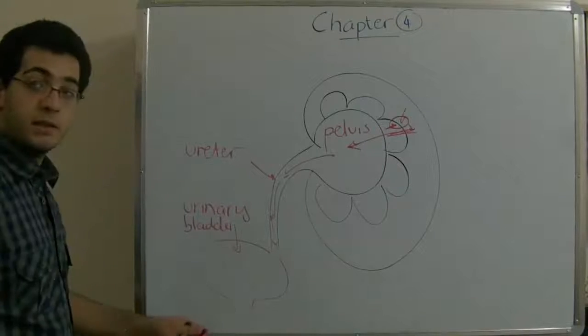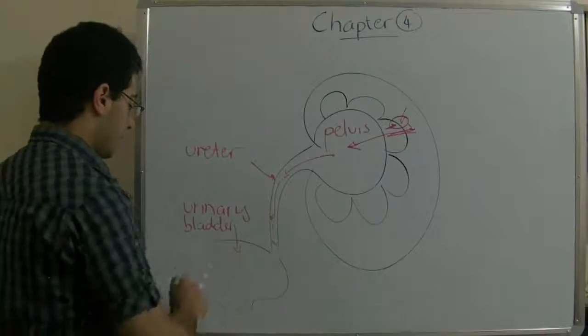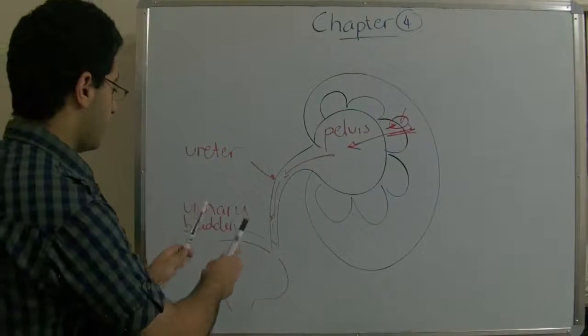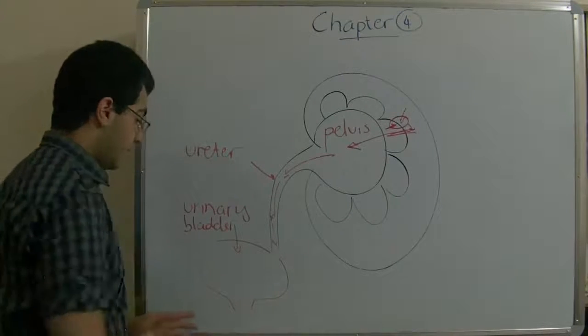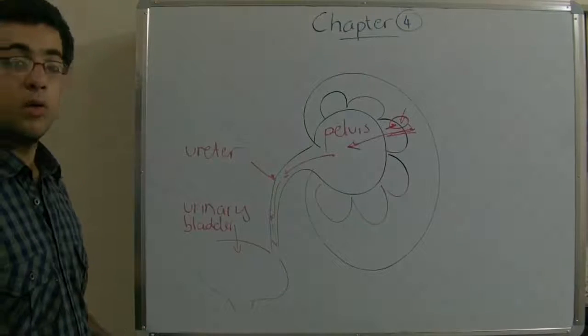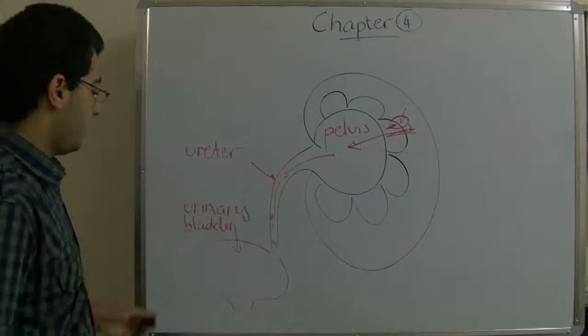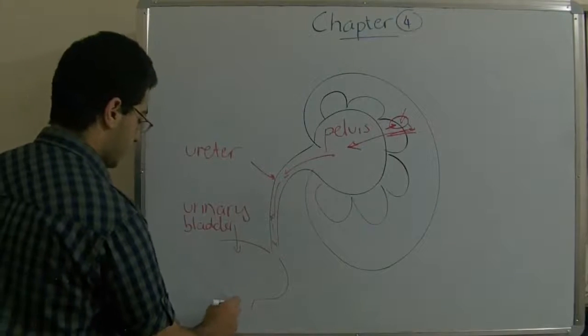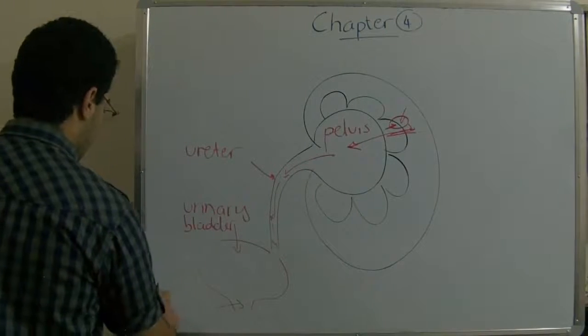There is a sphincter muscle which controls the urinary bladder. It closes the opening of the urinary bladder until the urine accumulates inside it. Then it opens, allowing the urine to be expelled outside the urinary bladder through this duct, which is called the urethra.